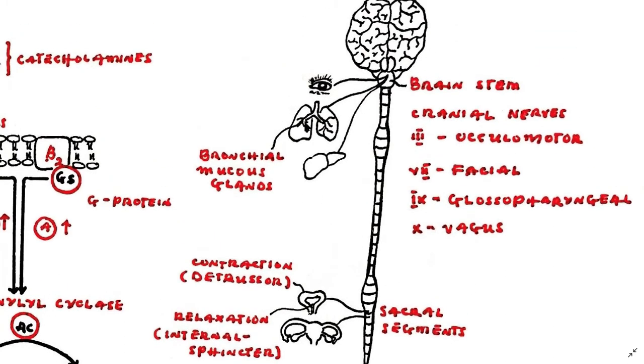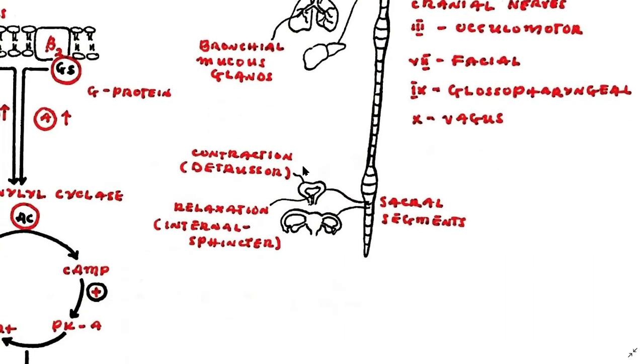For example, the bronchial mucus glands and either contraction as seen in the bladder detrusor or relaxation as seen in the bladder internal sphincter.